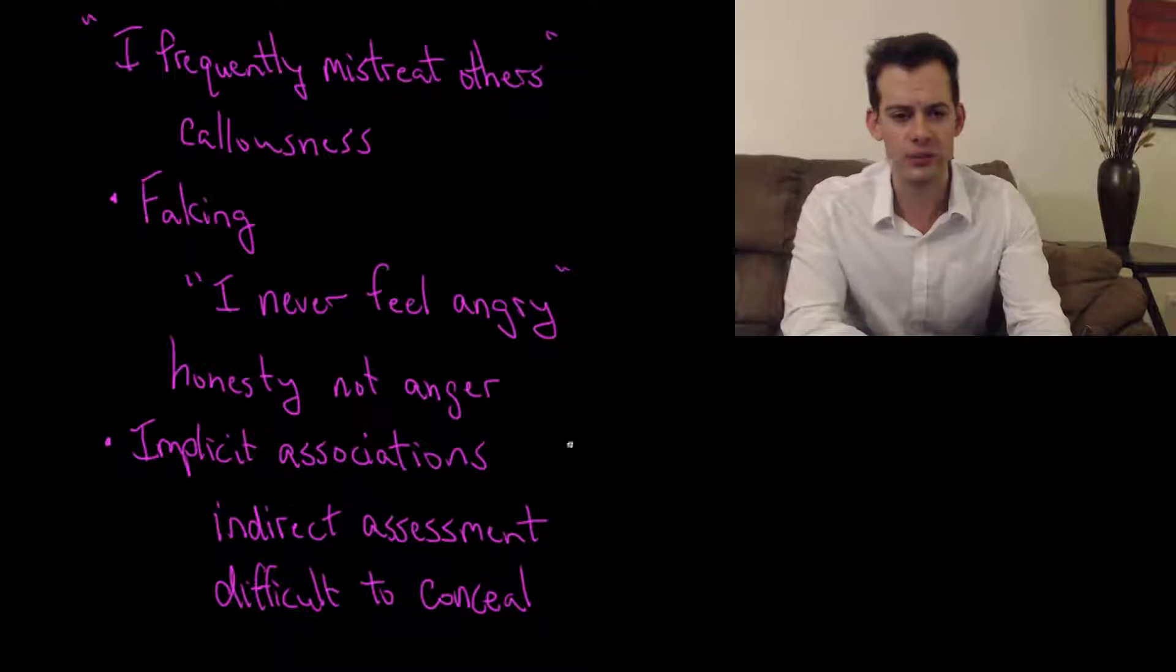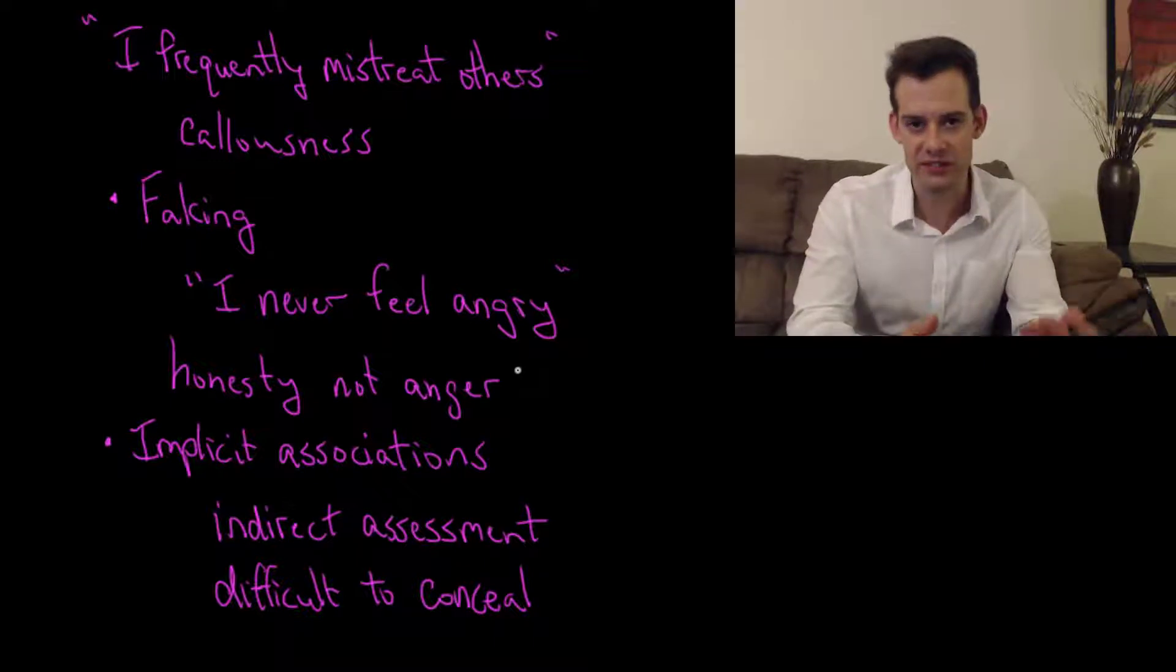So that's one way we can try to get around this problem of traits with negative connotations. Another way is we can try to use implicit measurements, implicit assessments. We might measure things that are indirectly associated with the negative traits we want to study.